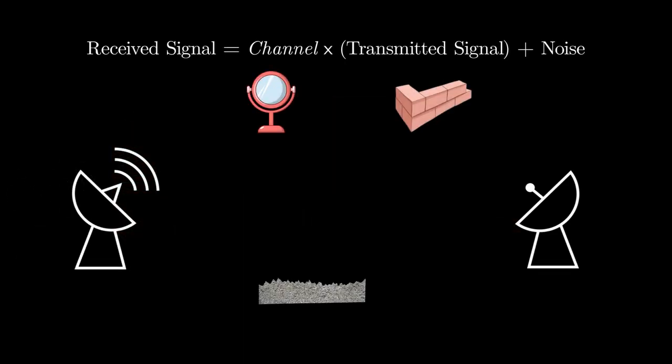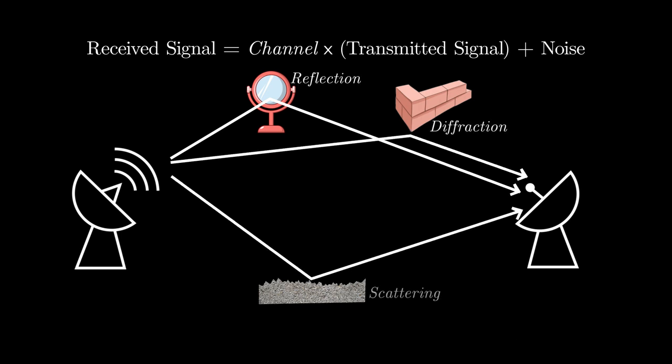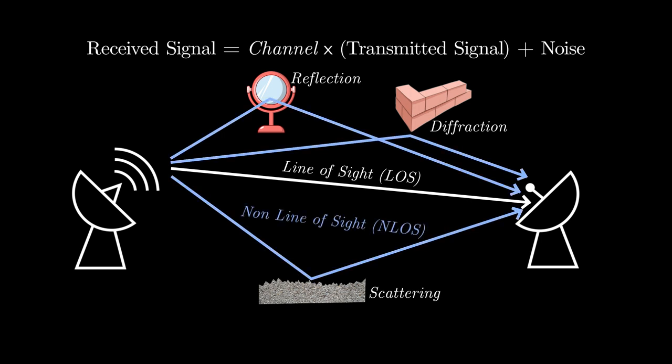If there are surrounding objects, there can be multiple signal paths, due to reflection, diffraction, or scattering. The direct path is called line-of-sight path, while all other paths are called non-line-of-sight path.